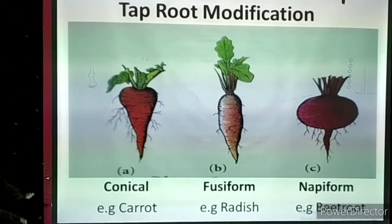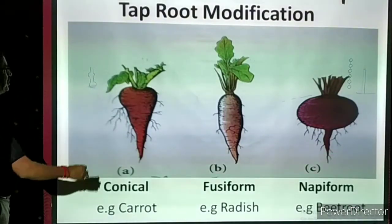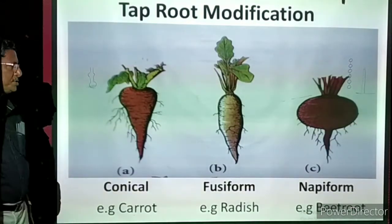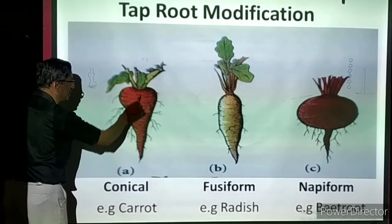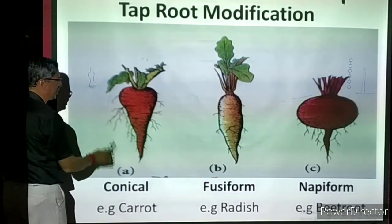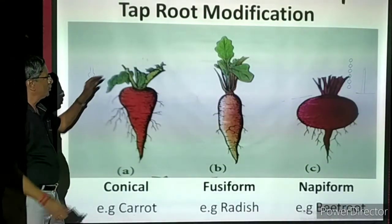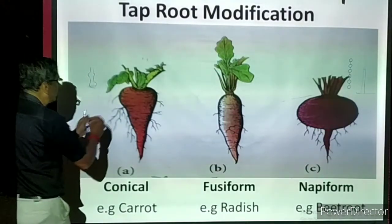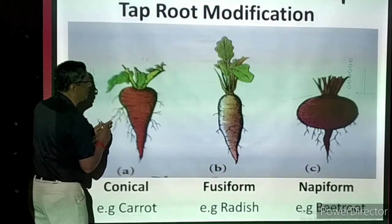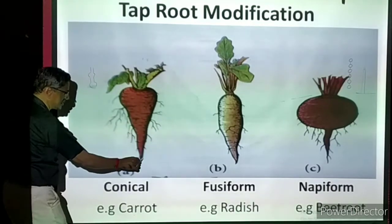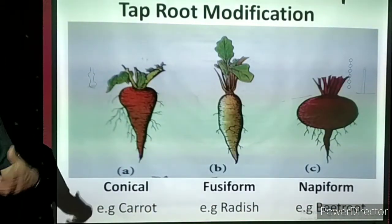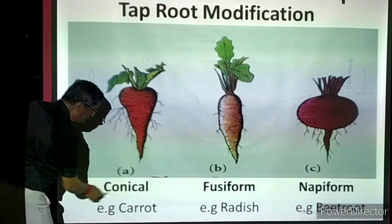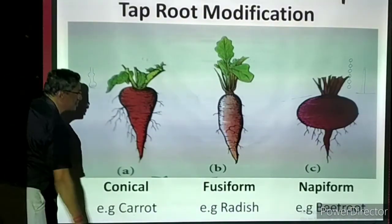Now we take tap root modification for storage — three types. First is conical modification: the leaves prepare a lot of food and send it to the primary root, which stores more and more food and becomes stouter, taking a cone shape — one end broader, one end pointed. This conical-shaped modification is seen in carrot.